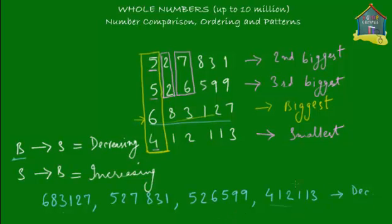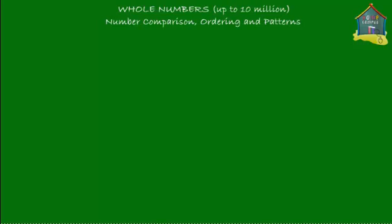If you had to write these four numbers in increasing order, you would just reverse the pattern. The numbers would come in this order: 412113, then 526599, then 527831, and then 683127. That gives you the increasing order. So that's number ordering — if you practice more, you'll learn more. Now let's look at numbers that have a certain pattern to them.